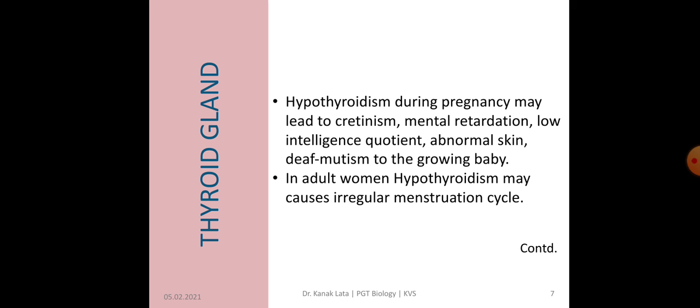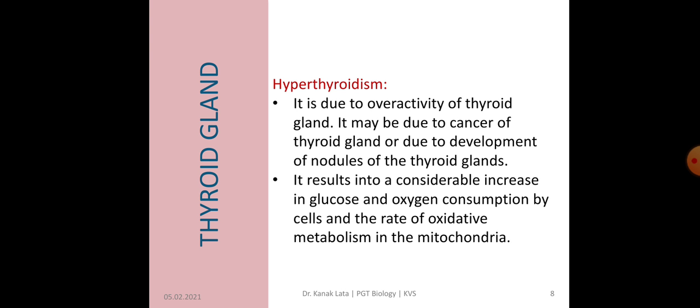Other effects include abnormal skin and deaf mutism. Hypothyroidism may also cause irregular menstruation cycle in adult women. The next disorder is hyperthyroidism, which is due to overactivity of thyroid gland. It may be due to cancer of thyroid gland or development of nodules of the thyroid gland, leading to a considerable increase in glucose and oxygen consumption by cells and the rate of oxidative metabolism in the mitochondria.